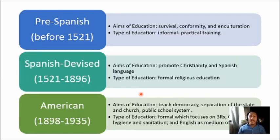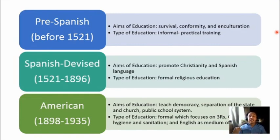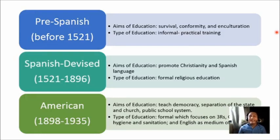From 1898 to 1935 — the American Period — America began its reign in the Philippines. The 600 Thomasites played a major role in educating early Filipinos. The Thomasites were US teachers who traveled to the Philippines aboard the ship USS Thomas. The curriculum evolved into a more organized, systematic, academic, and skills-focused form. The aims of education were to teach democracy, separation of church and state, and establishment of the public school system, promoting democratic ideas and way of life.